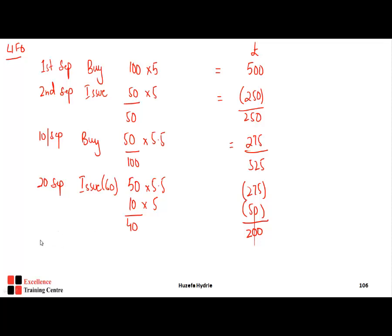On 27th September, we buy 100 units at £5.60 = £560. Adding to the £200 remaining, the closing inventory value is £760, with 140 units in total.